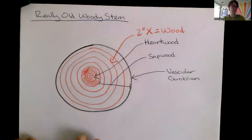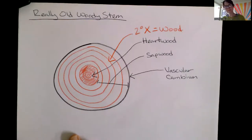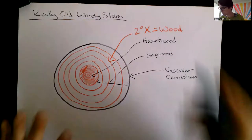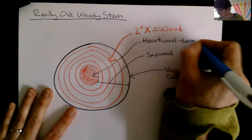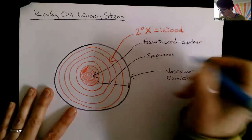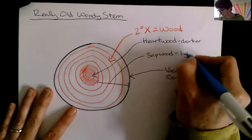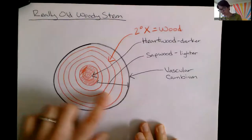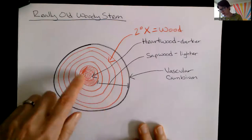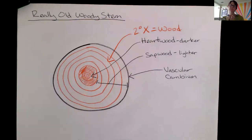Now both of these are just regions of secondary xylem. They're going to be a little bit different in color. Right, heartwood is darker. Sapwood is going to be lighter in color and it's going to be closer towards that vascular cambium, whereas the heartwood is going to be closer to the heart, the center of the tree.